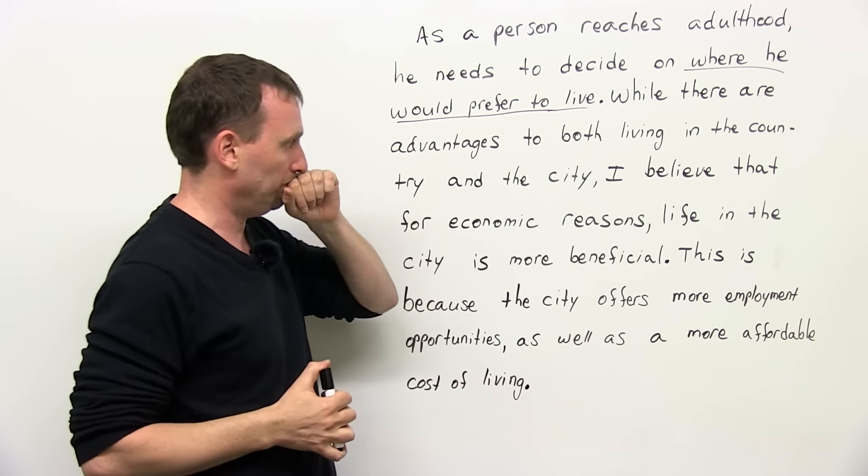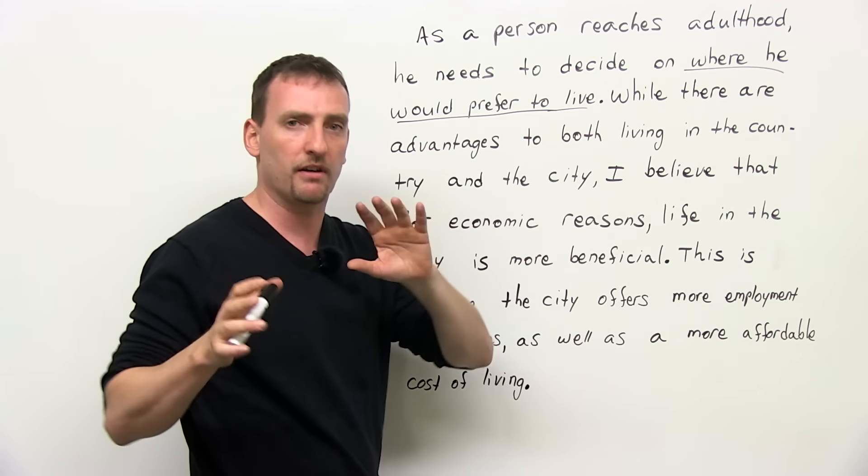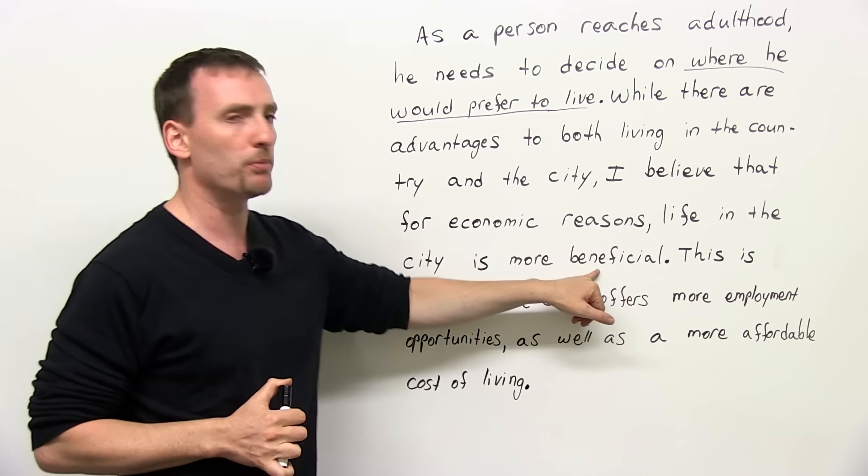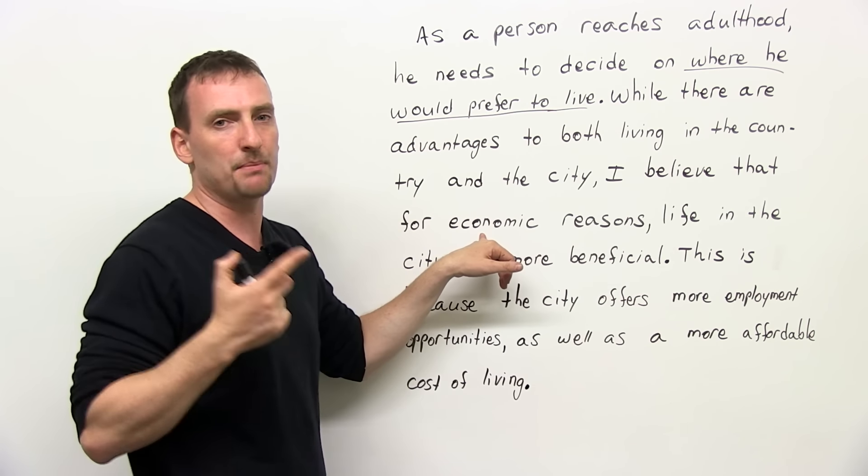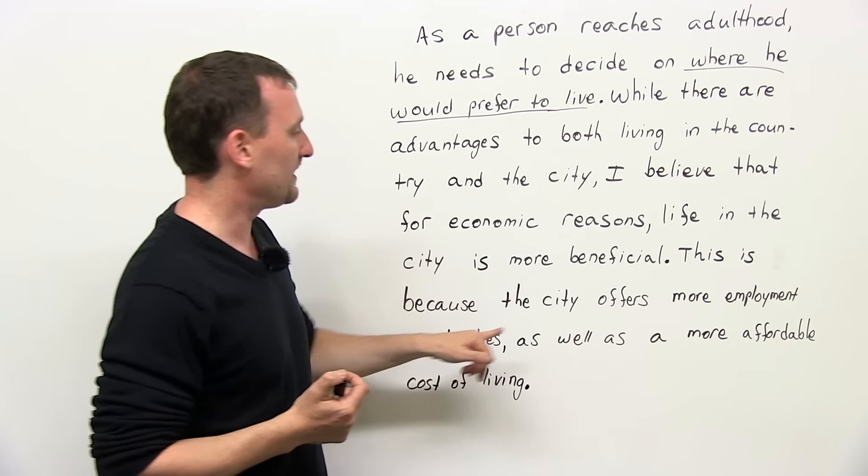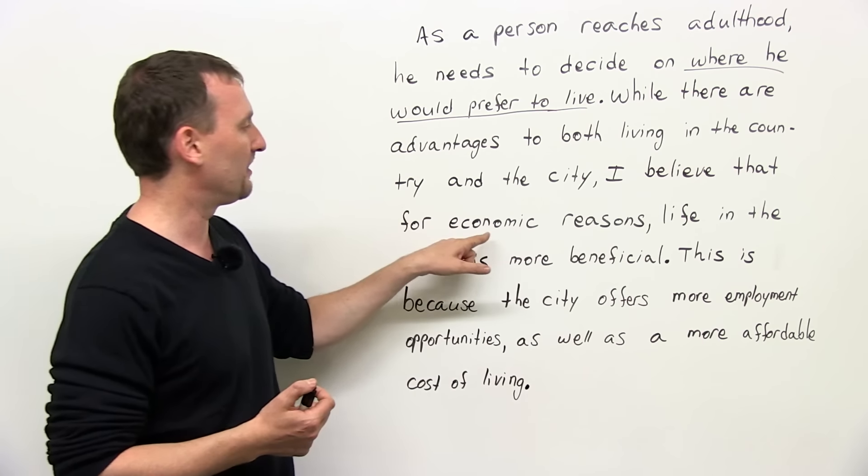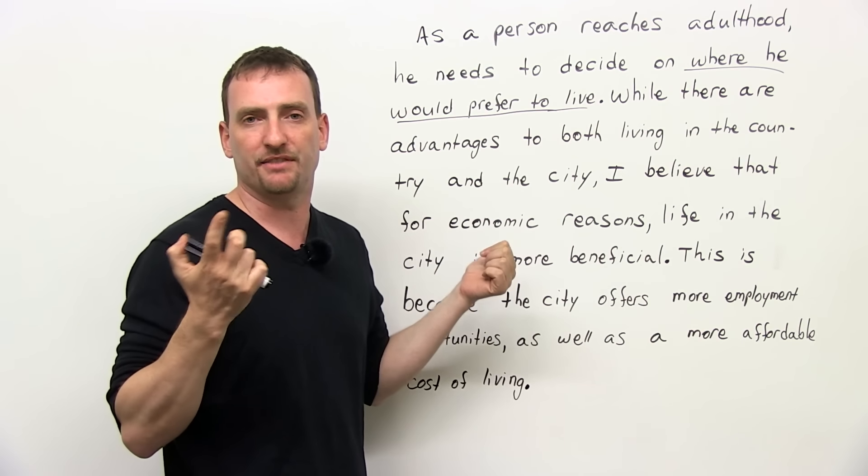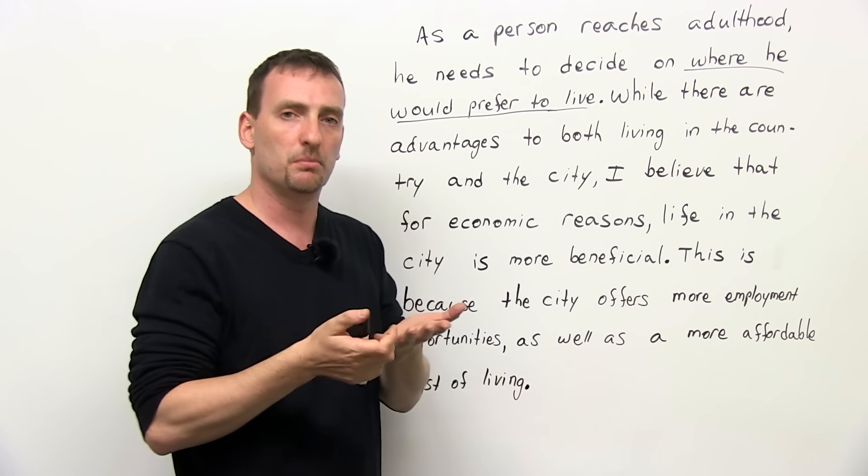Next. While there are advantages to both living in the country and the city, so here I'm introducing the fact that I might be comparing. Both have advantages, so I'm going to compare these. I believe that for economic reasons—I have your thesis and your main reason—life in the city is more beneficial. I've chosen one. Here's my general reason. Now you think, okay, done, right? No, because here's an example of where you can use one reason for your whole essay. You don't have to have two reasons, we think. This is because the city offers more employment opportunities, as well as a more affordable cost of living. So now you realize I actually do have two reasons under the umbrella of the one reason. So many people think, oh, I can't think of ideas, I don't know what to say about this. If you can have one idea, that's fine. Split it into two categories, right? Economic reasons: jobs and cost of living. It's cheaper to live in the city because more people, more things come in, etc.